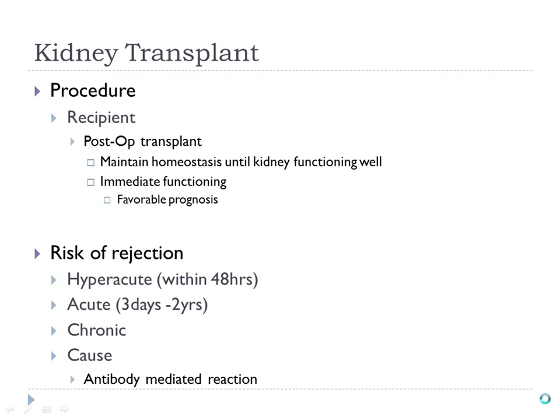Obviously, the person who receives an organ from someone else has a risk of rejection — it's an autoimmune response. There are three types: hyperacute, acute, and chronic.